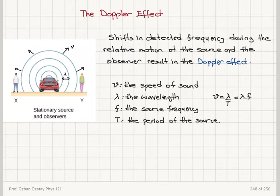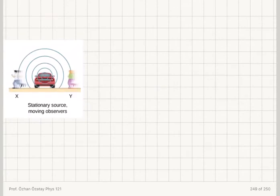We're going to look at two scenarios: one in which the source is moving and the observer is stationary, and two, the observer is moving and the source is stationary. Let's start with the relative motion of the source and observer.